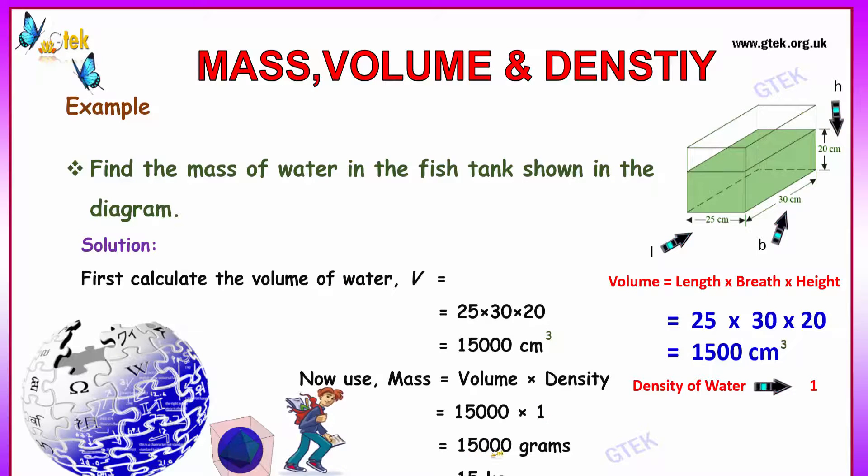So mass is 15 kg. Divided by 1000, 15 divided by 1000 gives the kilogram. 1 kilogram equals 1000 grams, so we get mass equals 15 kilograms.